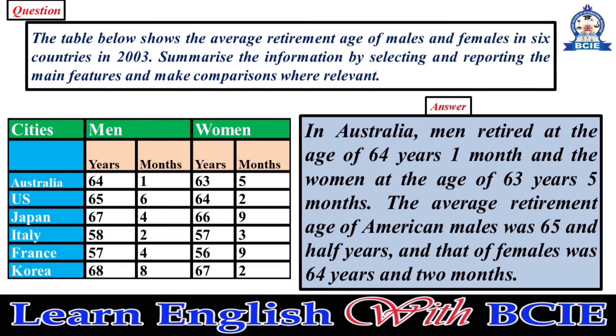In Australia, men retired at the age of 64 years one month, and women at the age of 63 years five months. The average retirement age of American males was 65 and a half years, and that of females was 64 years and two months.